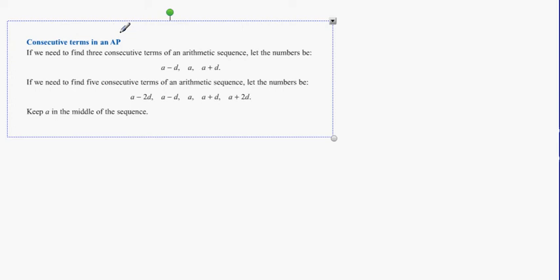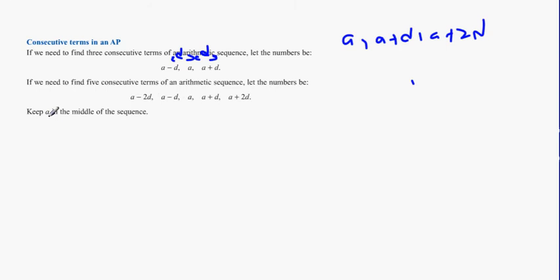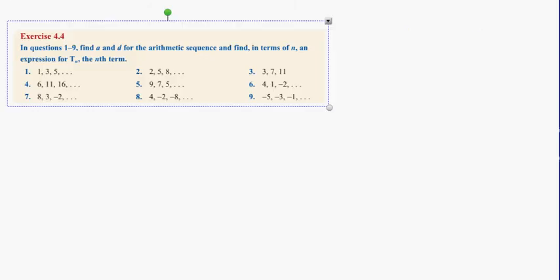For consecutive terms in an arithmetic progression: if we need to find 3 consecutive terms, let the numbers be A minus D, A, and A plus D. The common difference is still D, and A sits in the middle. This is equivalent to A, A plus D, A plus 2D, but more convenient. For 5 consecutive terms, use A minus 2D, A minus D, A, A plus D, A plus 2D — keeping A in the middle of the sequence.